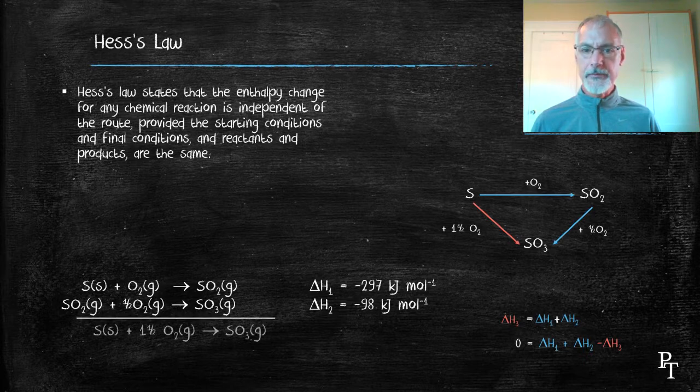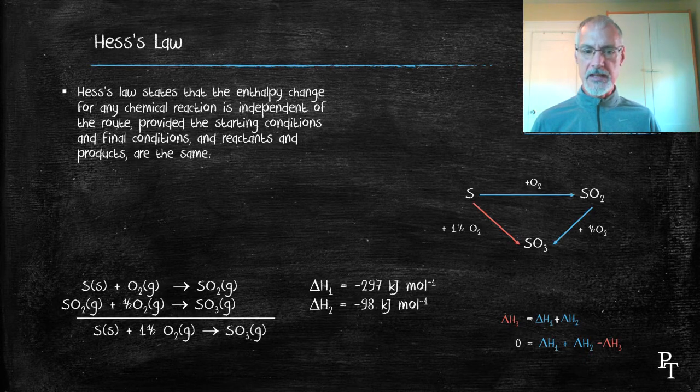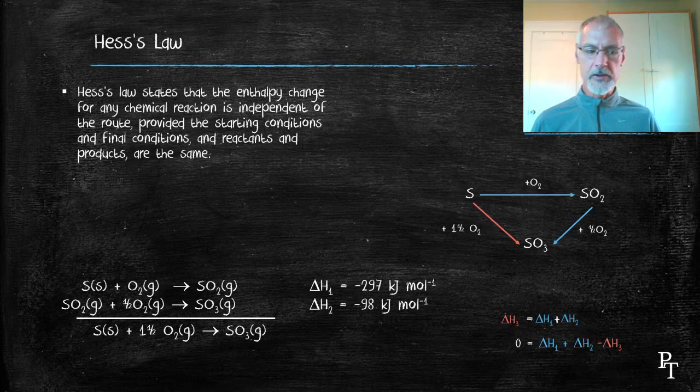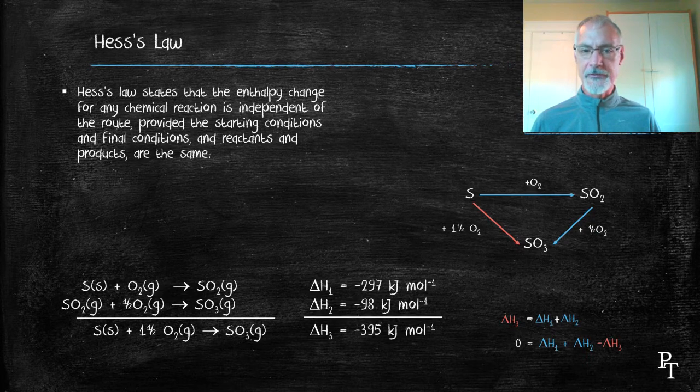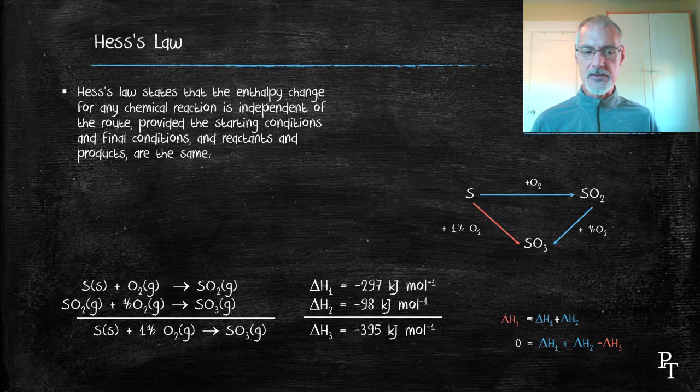If I add these two steps together, I get the red arrow, the description of going from sulfur to sulfur trioxide. Thereby I just add together their two heats and I also arrive at the overall enthalpy change for that reaction.